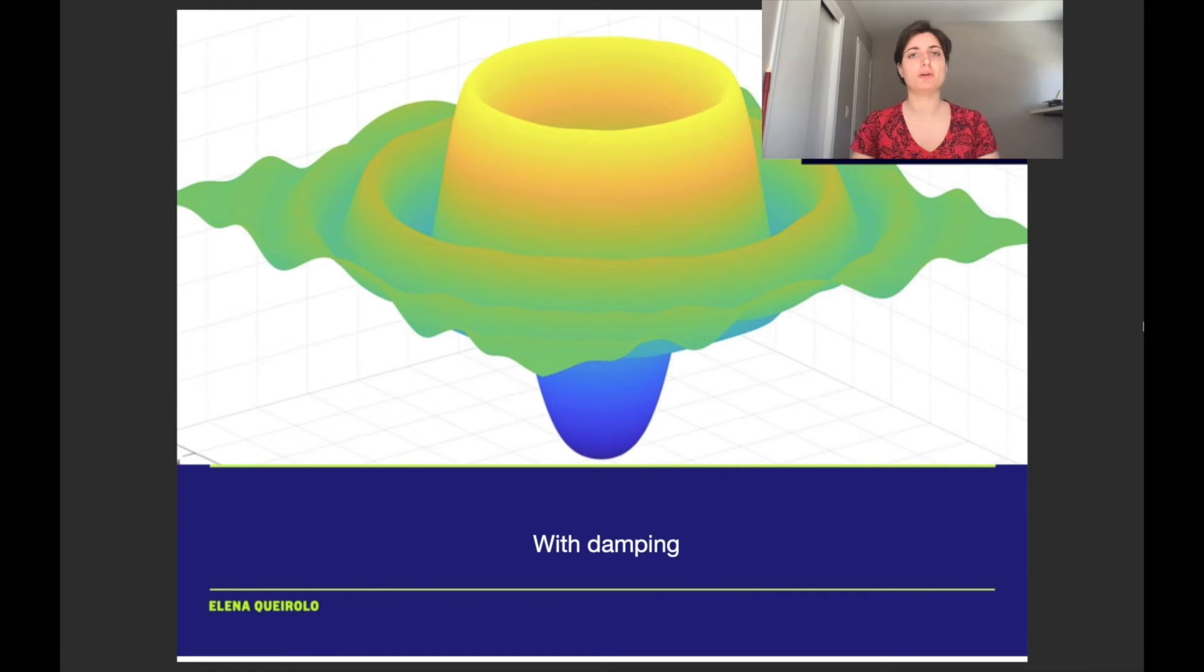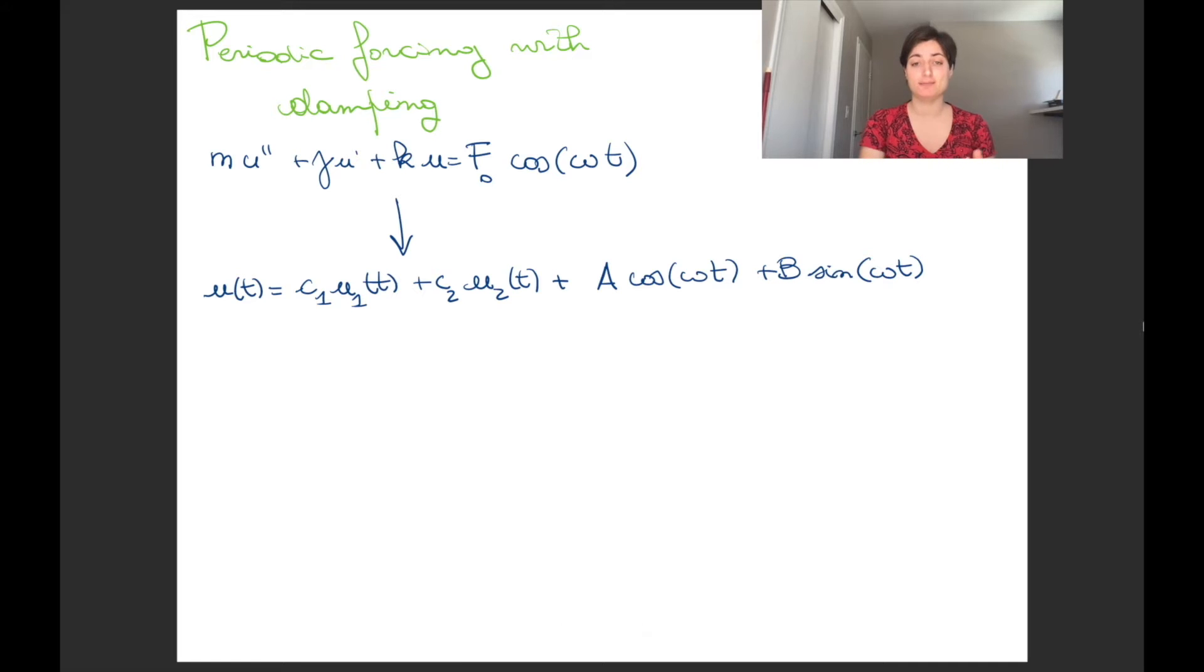What happens in general when we are adding a forcing term to a spring that has damping? Let's look at the situation. So we have mu'' + gamma u' + ku, that is the model of the spring with damping, and we're forcing it with a forcing term that is a constant f0 times cosine of omega t.